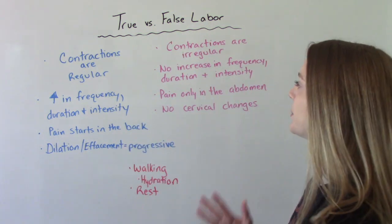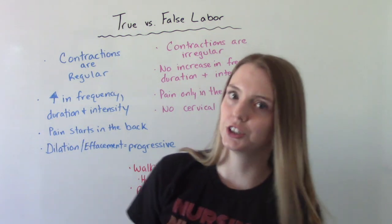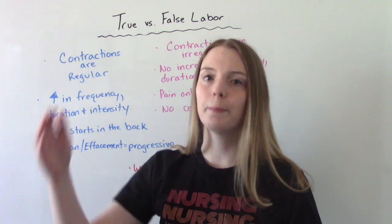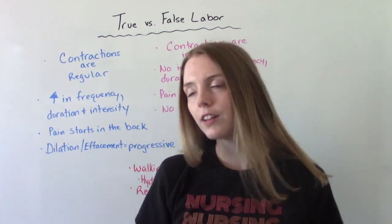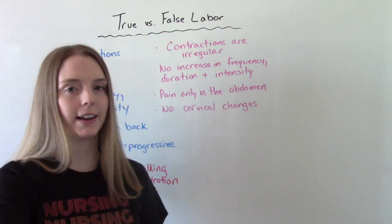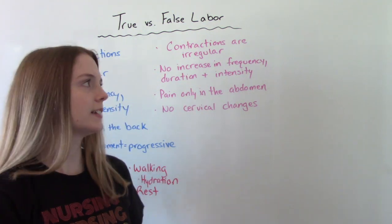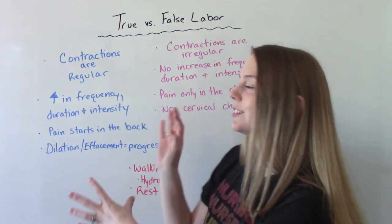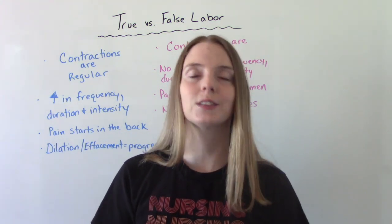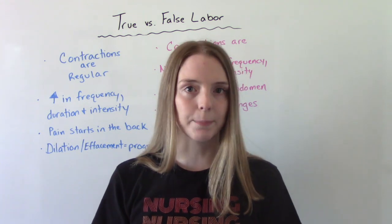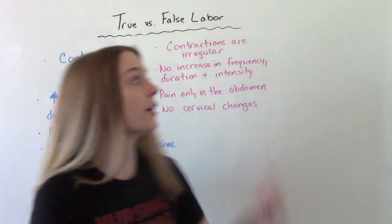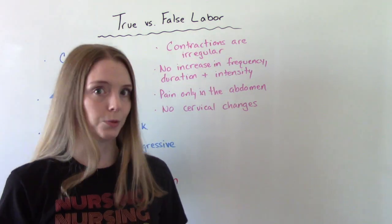In true labor, let's start with contractions. In true labor your contractions are going to be in a nice regular pattern. In false labor they're going to be irregular. The whole point of contractions is to cause cervical dilation and effacement, so we want those contractions to be nice and regular. When they're irregular, they're not doing that.